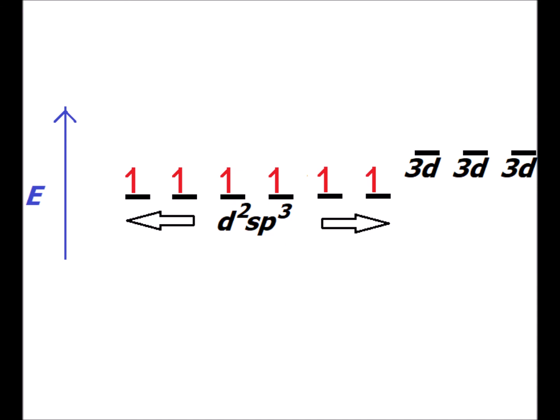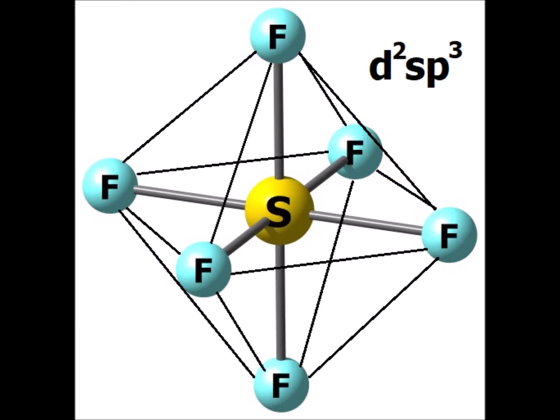The result is six iso-energetic d²sp³ orbitals, each of which is half-filled, so sulfur in this hybrid configuration is able to make six bonds. The six d²sp³ hybrids are directed toward the corners of an octahedron, so SF₆ has an octahedral configuration with the sulfur being d²sp³ hybridized.